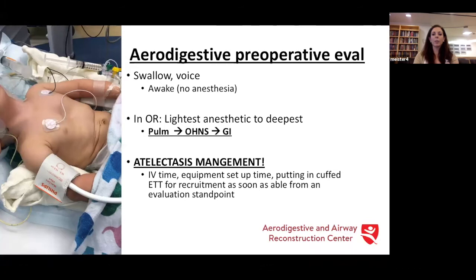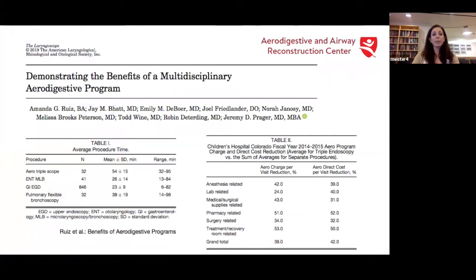The time it takes to get the IV and set up equipment — we really want to minimize atelectasis, especially for children who are chronic aspirators with other pulmonary comorbidities. As soon as we can, we try to get in a reasonable endotracheal tube to recruit the patient.